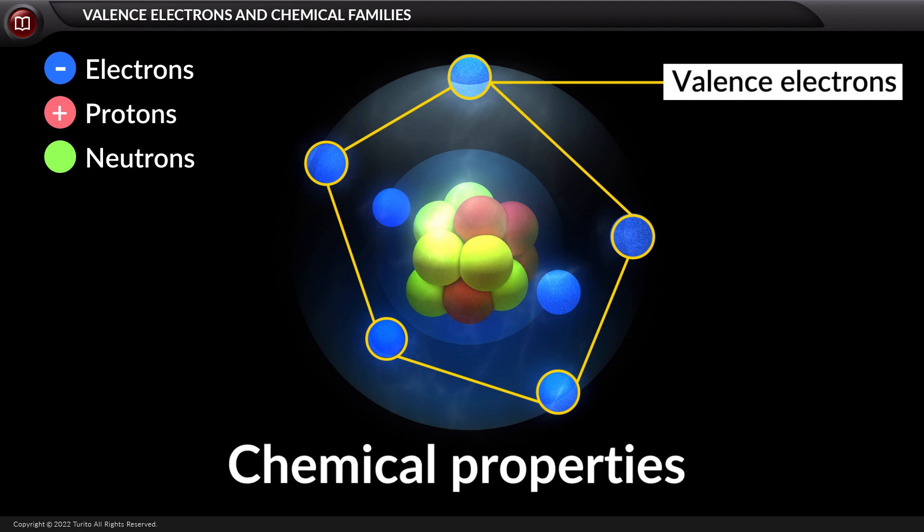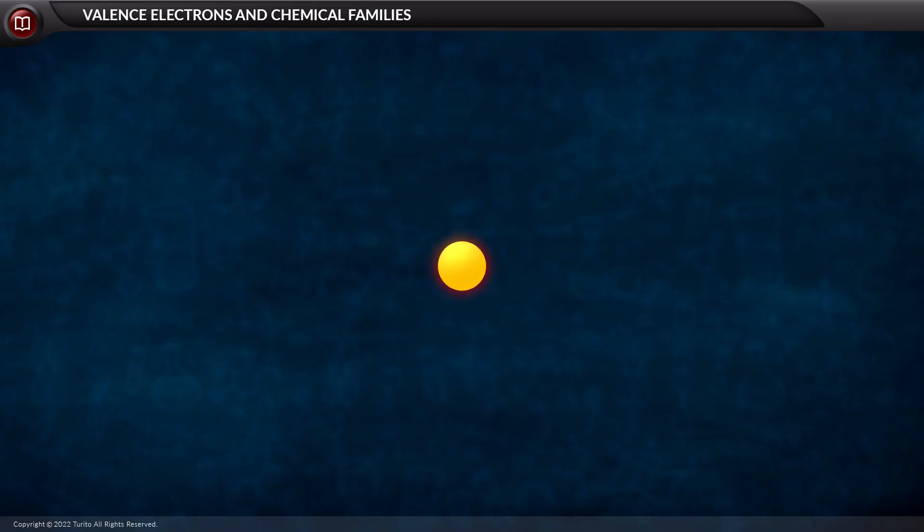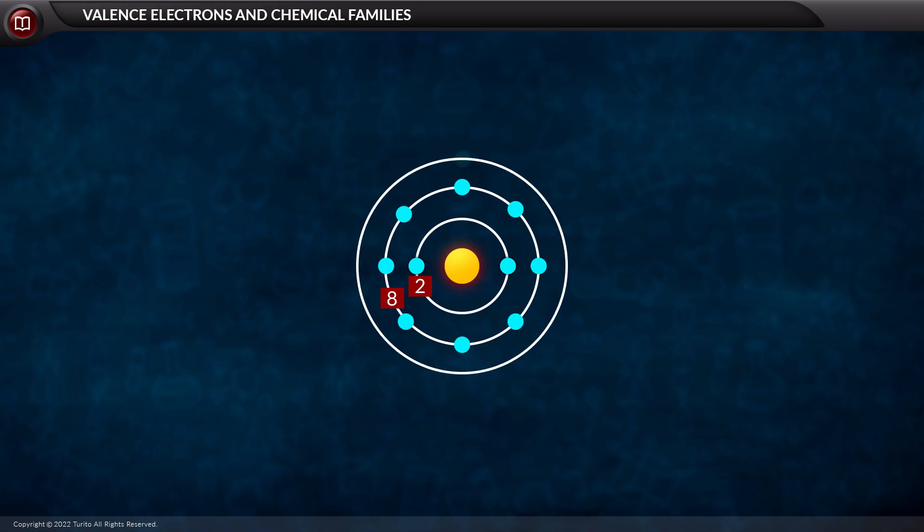In an atom, the electrons nearest to the nucleus form the first shell. The first shell or orbit can accommodate a maximum of two electrons. Thus, after the filling of the first shell with two electrons, the second shell starts forming. The second shell can accommodate up to eight electrons. Likewise, electrons get filled till the outermost or valence shell.